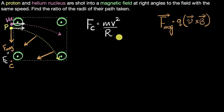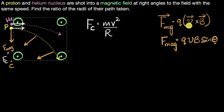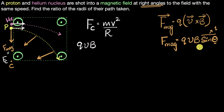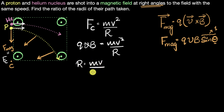Let's take the magnitude of the magnetic force: that's qvB sin theta, where theta is the angle between the velocity vector and the magnetic field vector. That angle is 90 degrees — sin 90 is one — so the magnetic force is simply qvB. Setting that equal to mv squared over r, and simplifying, I get r equals mv divided by qB. That's the expression for the radius, and I don't need to remember it because I can always derive it.